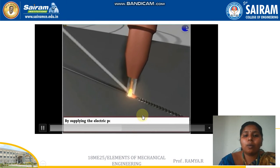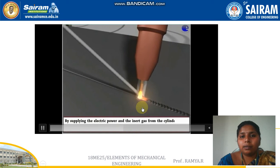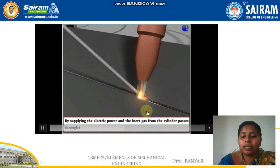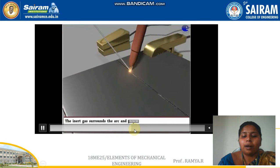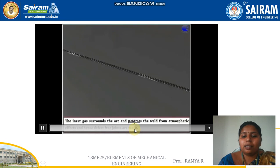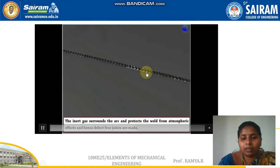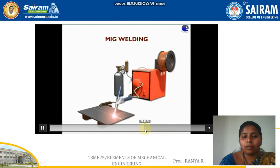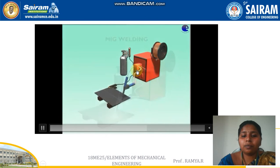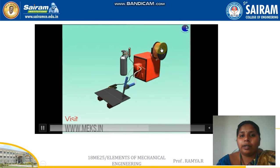This is how tungsten inert gas welding takes place. The next part is about metal inert gas welding. In MIG welding, the electrode is fed as a wire.